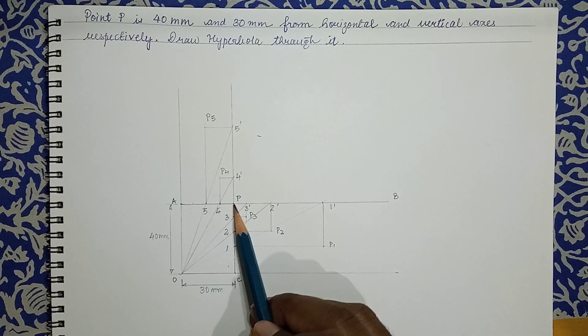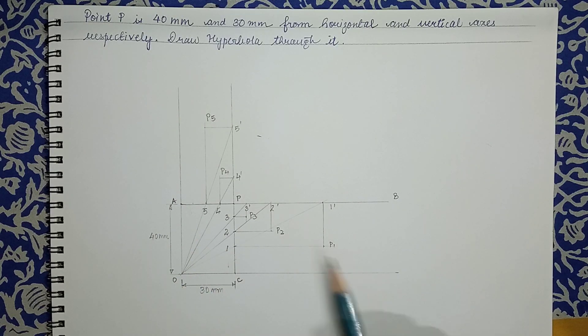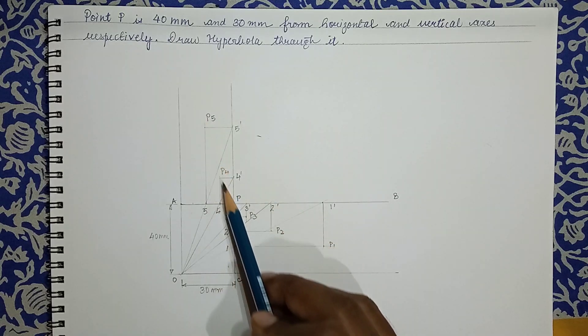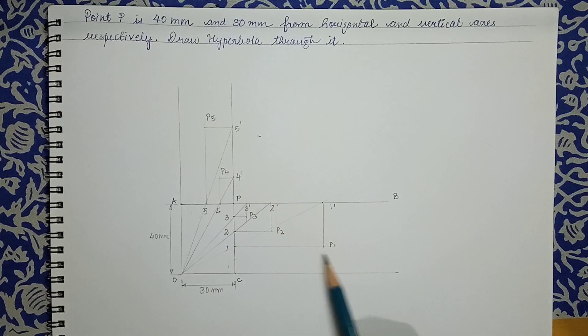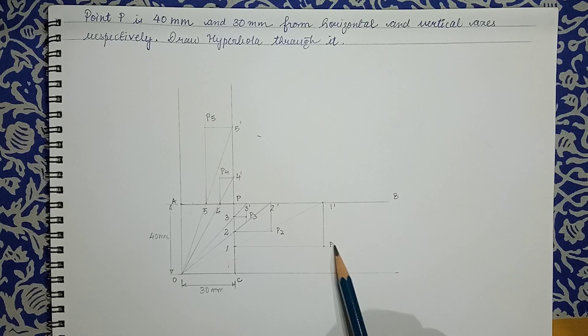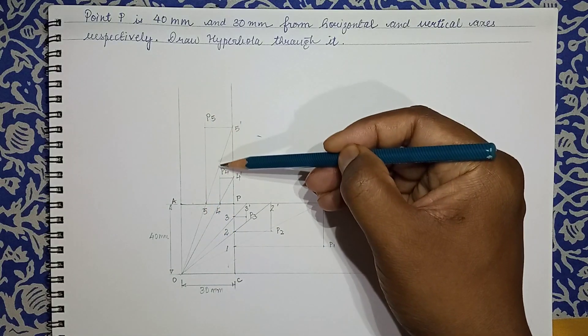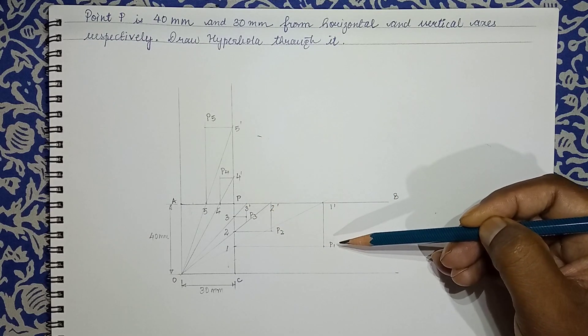So I'll have point P4 and point P5. So what is happening here: this point P has a constant relationship with the vertical as well as with the horizontal axis, and it is changing its position with the relationship. And with this relationship, it is tracing a path.